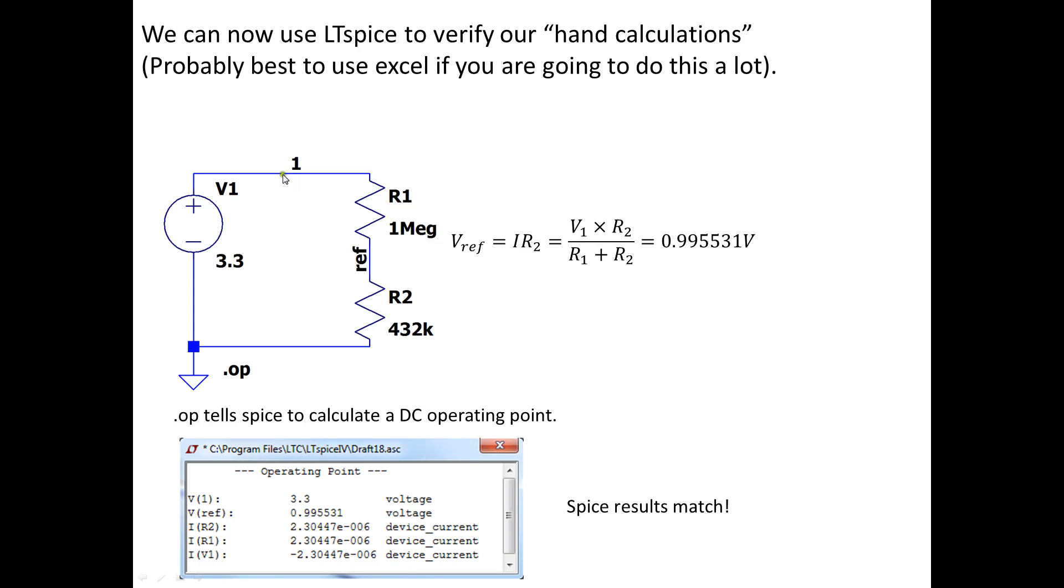Now, I can plug this into my circuit. I have R1, 1 megaohm. R2, 432 kiloohms. This simulation.opt tells the software to calculate a DC operating point. And I get 3.31 volts, which is node 1. That's true. And a Vreference of 0.995531 volts, which matches my hand calculations exactly. So, you can see that in this simple circuit, I was able to match my hand calculations to the spice, or the spice to my hand calculations exactly.